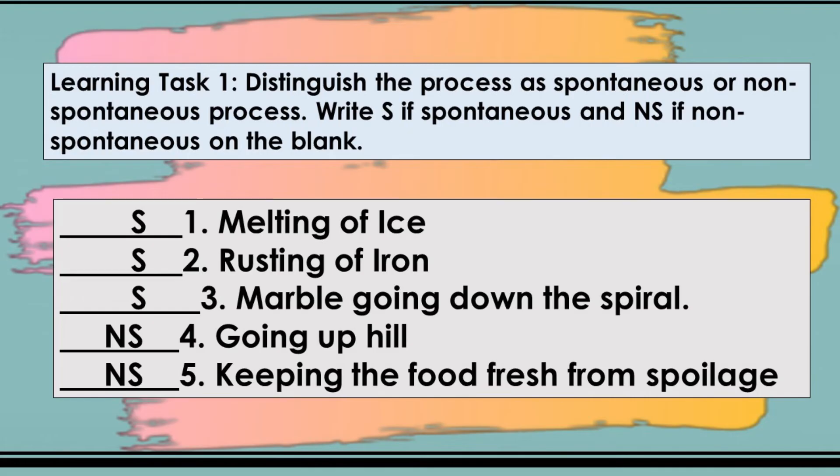Numbers 1, 2, and 3 are all spontaneous process because they are all natural process and they do not require any external mechanical energy for them to happen. Number 4. Going uphill. Non-spontaneous. Number 5. Keeping the food fresh from spoilage. Non-spontaneous. Numbers 4 and 5 are both non-spontaneous process. It is because they require an external force or mechanical energy for them to happen.